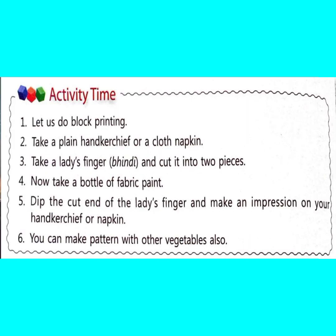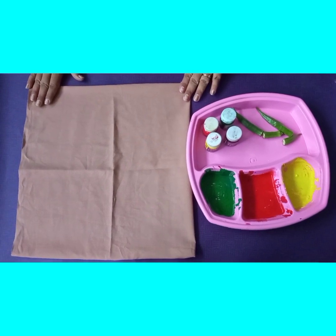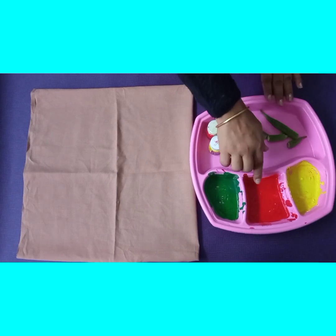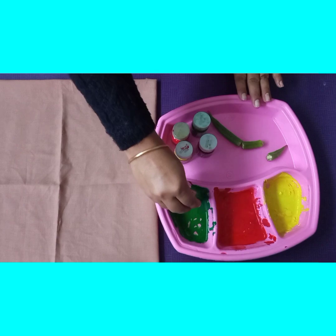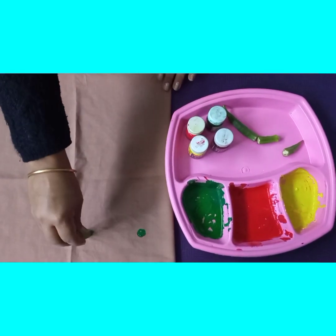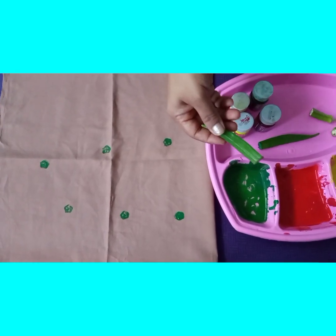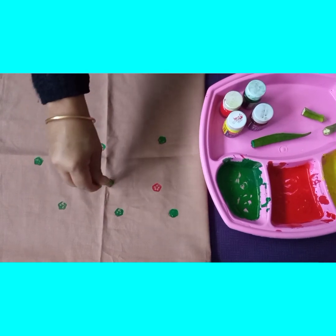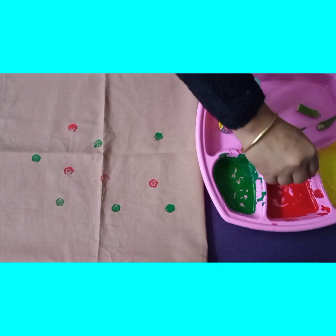Now it's activity time! We will do block printing. For block printing, we need a plain cloth napkin, fabric colours, and a lady finger. First, pour the colours into a tray. Cut the lady finger and dip it into the colour, then make designs on your fabric. Take another piece of lady finger, dip it in a different colour, and make more designs on the fabric.